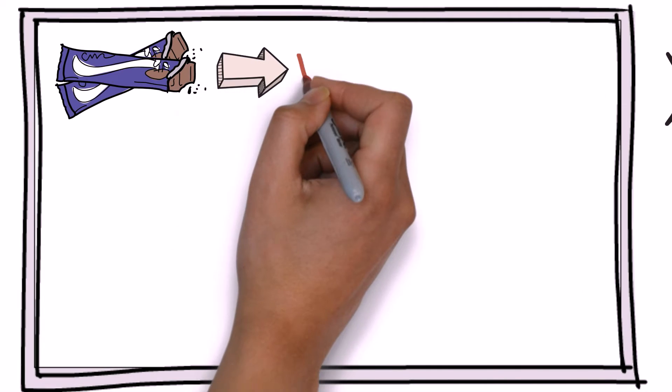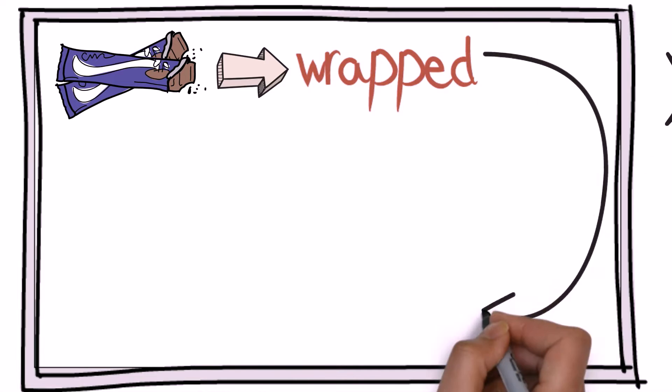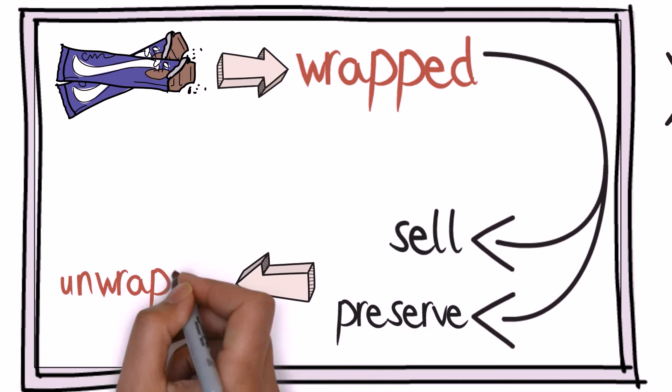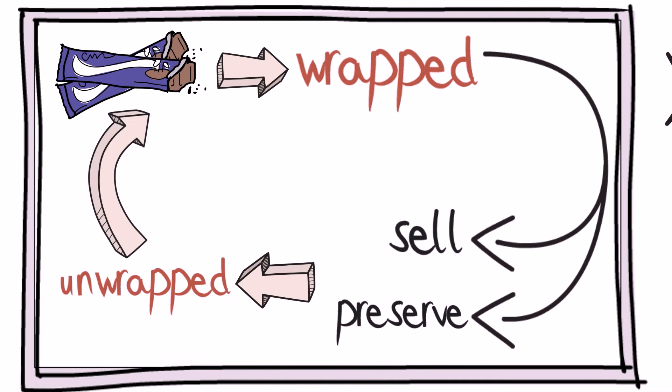Let's look at another example. Consider the chocolates. The chocolates are first wrapped before they can be sold, and that is, the chocolates are wrapped for the purpose of selling and keeping them from getting contaminated, and then we finally unwrap them before we can actually have them.